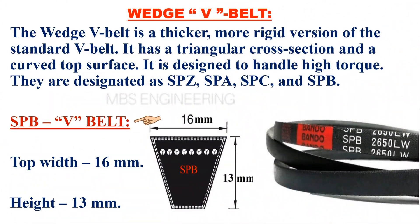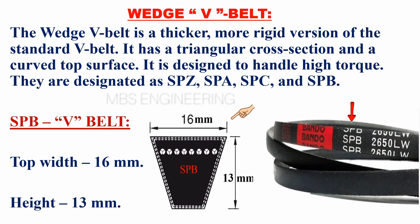We will understand the SPB V-belt. The top width of the SPB V-belt is 16 millimeters. The height of the SPB V-belt is 13 millimeters. Please take a look at the figure that shows the SPB V-belt.